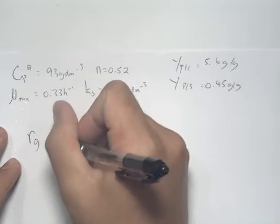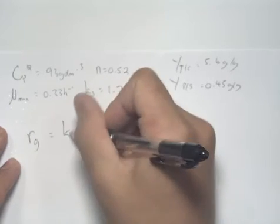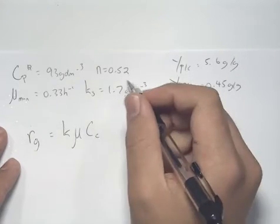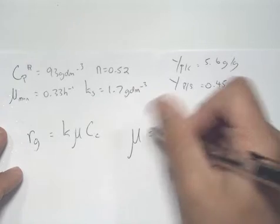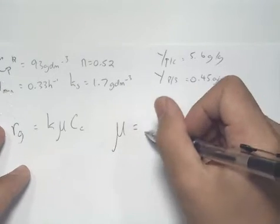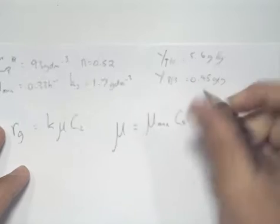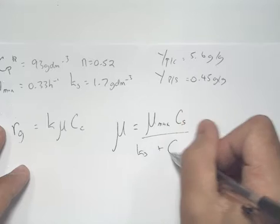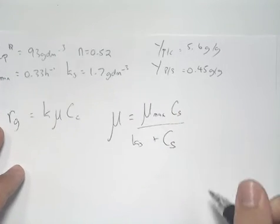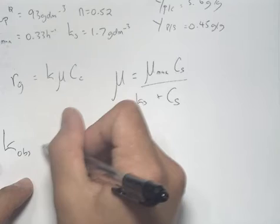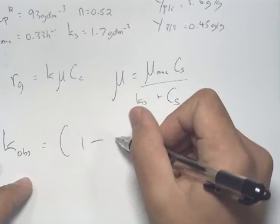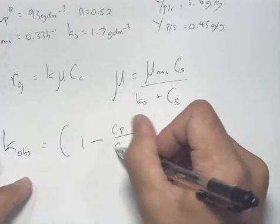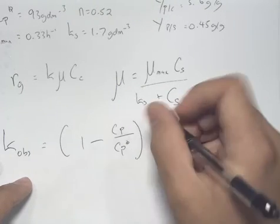We have the cell growth rate Rg equal to k times mu, the specific growth rate, times the cell concentration. The specific growth rate mu equals the maximum specific growth rate times the substrate concentration over the Michaelis-Menten constant Ks plus the substrate concentration. Our k value is equal to 1 minus the product concentration over the specific product concentration.